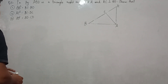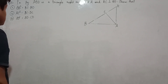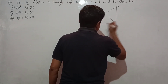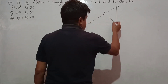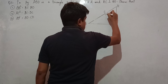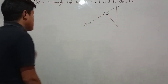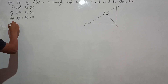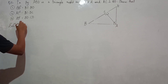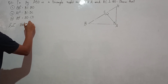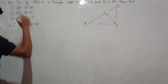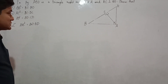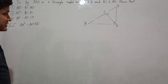Exercise 6.5, question number 3. In the figure, ABD is a triangle right-angled at A, so angle A equals 90 degrees, and AC is perpendicular to BD. We need to prove AB² equals BC·BD. We will prove this by using the similar triangles criteria.